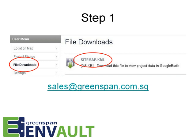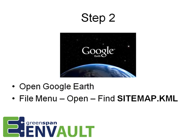Once you are in this area, click on the sitemap.kml file and download it to your local PC. KML is short for Keyhole Markup Language, the language used for displaying geographic visualizations by Google Earth and other programs. Then you'll need to open Google Earth — from the file menu select Open and navigate to the sitemap.kml file on your computer.